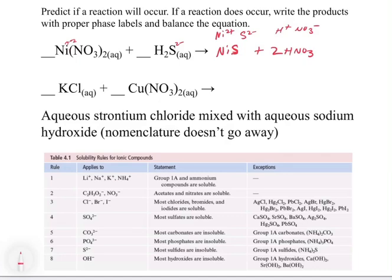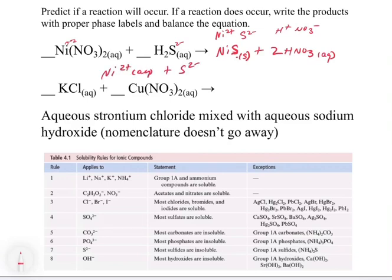Now we consult our solubility rules to decide if these are going to be soluble or not. Nickel sulfide is not soluble — most sulfides are insoluble — so this gets a solid label. And then we get 2HNO3 — nitrates are soluble, so we give it an aqueous. We can also write the net ionic equation. The nickel 2+ and the sulfide 2− are coming together: Ni²⁺ aqueous + S²⁻ aqueous → NiS solid. Everything else is going to be a spectator.